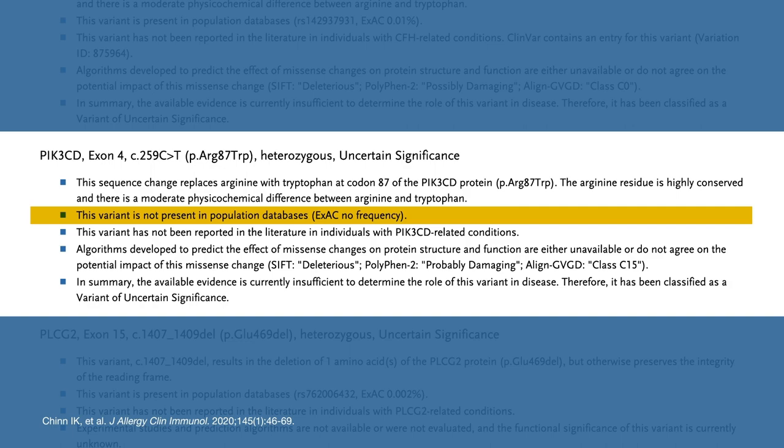In addition, family screening is also helpful in classifying VUSs, because if other relatives have the same variant and similar clinical phenotype, it is stronger evidence that the variant may be pathogenic. Some commercial panels may offer discounts for family testing.